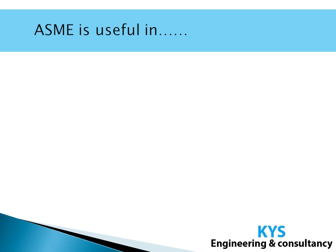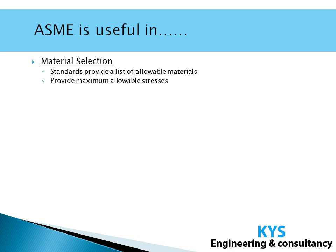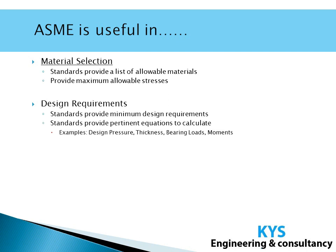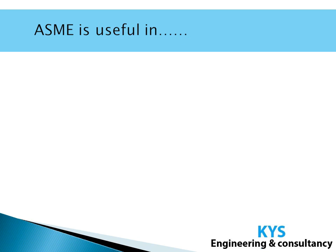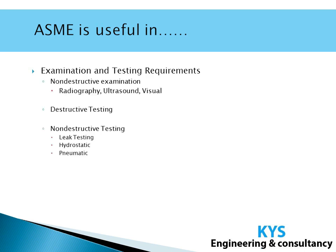Now let us see how ASME is useful in engineering activities. It helps us in material selection — it provides a list of allowable materials and allowable stresses in those materials. It helps us in design requirement calculations, providing equations for calculation of design pressure, thickness, moments, loads, and also minimum design requirements. It helps in fabrication requirements — material requirements for cutting, grinding, tolerance for bolt spacing, and type of attachment to be used in welding and bolting. It helps us in testing requirements: non-destructive examinations whether radiography, ultrasound, visual, or destructive testing; or non-destructive testing like leak testing, hydro testing, or pneumatic testing. ASME provides guidelines for all of these.